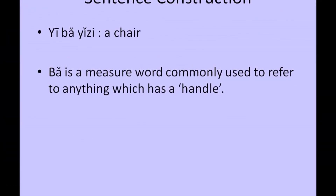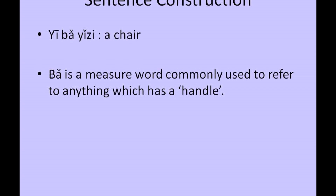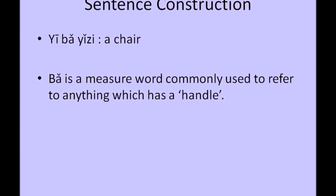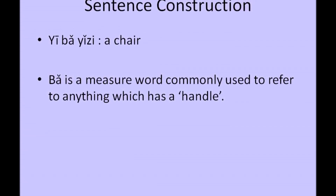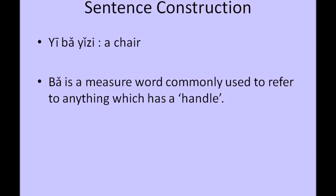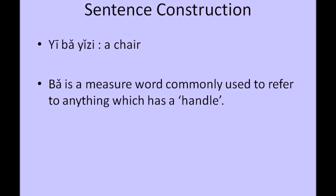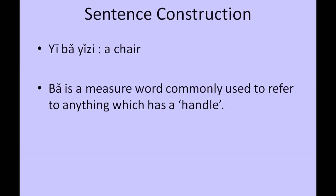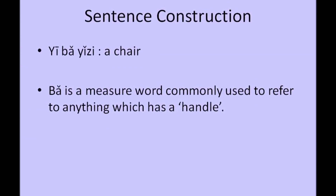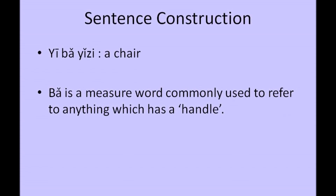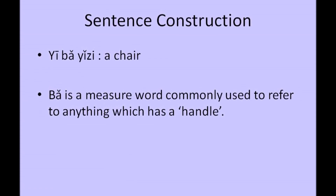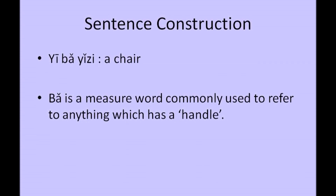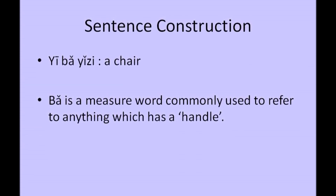一把椅子, which means a chair. 一把椅子. 把 is a measure word, which is commonly used for objects which have a handle. A traditional chair normally has two arms, hence gives the reasonable explanation for using this keyword to denote the number of chairs.